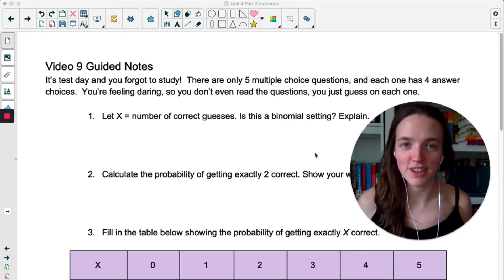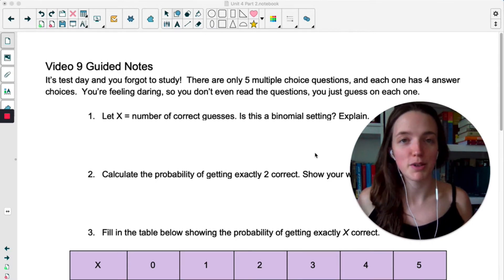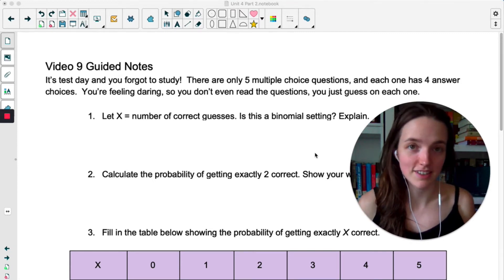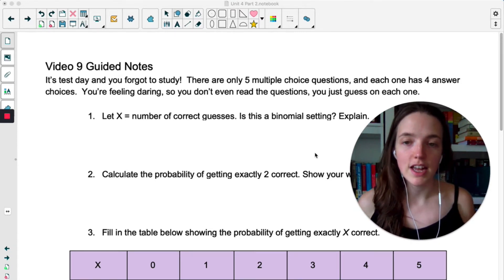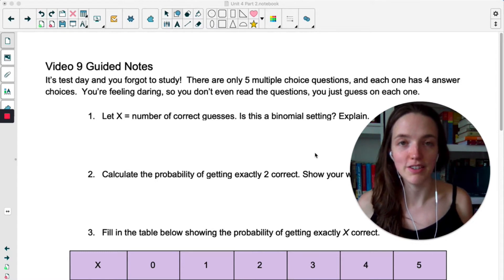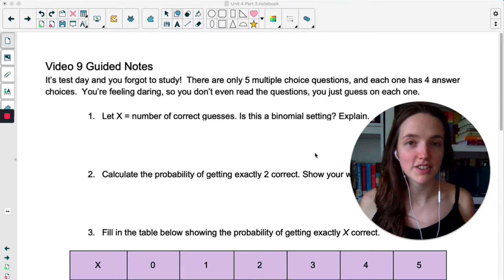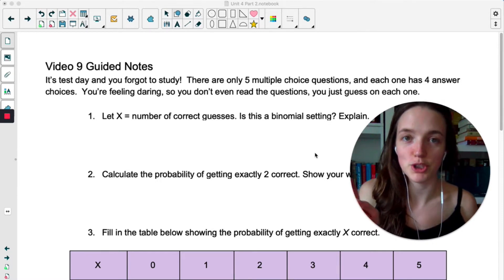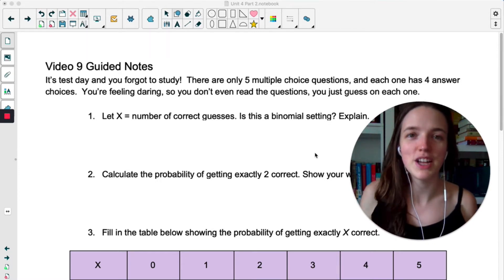These first two questions on the guided notes are both review from the last video. Number one, is this a binomial setting where x is the number of correct guesses or the number of questions you get right? And two, calculate the probability of getting exactly two right. Pause the video and do just one and two. Do not go on to the rest because I'm going to show you a shortcut. Just do one and two and then hit play.